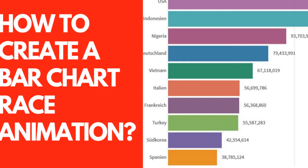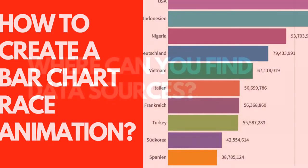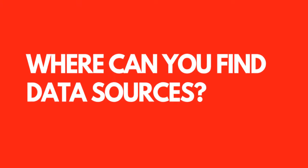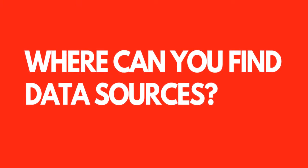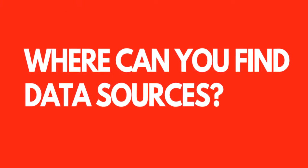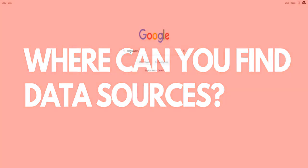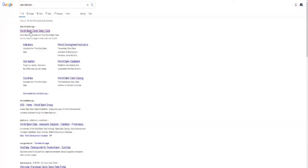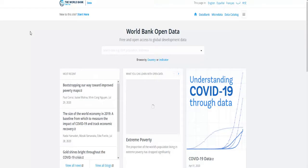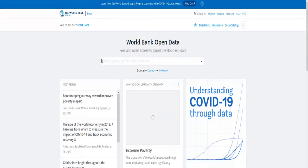The first question that might come up is: how can you find the right data sources? It is not that easy to find good data sources for a bar chart race because you might need long-term data. The best effects come from time series data, so the problem is to gather enough data. One good source might be the World Data Bank.